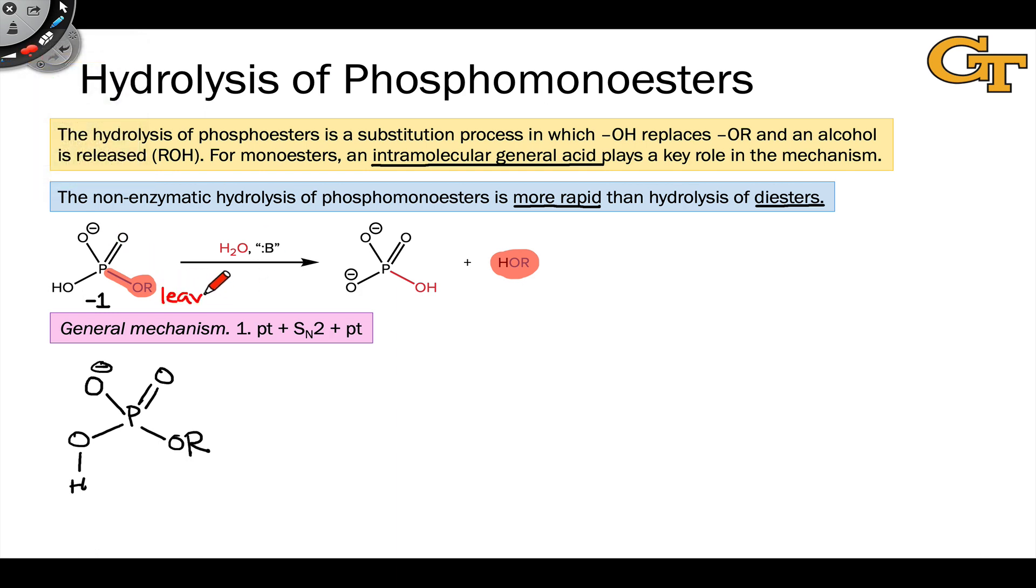This is a nucleophilic substitution process, as are essentially all hydrolysis. Water, more specifically the oxygen in H2O, is playing the role of nucleophile in this reaction. And phosphorus in the phosphomonoester is acting as electrophile, the atom that accepts a pair of electrons from the nucleophile.